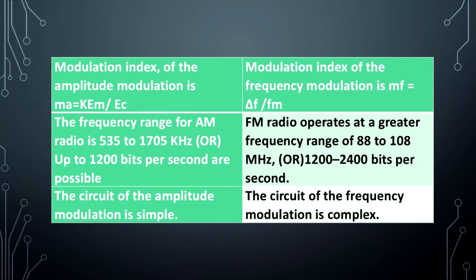The frequency range for AM radio is 535 to 1705 kHz, or up to 1200 bits per second. FM radio operates at a greater frequency range of 88 to 108 MHz, or 1200 to 2400 bits per second.